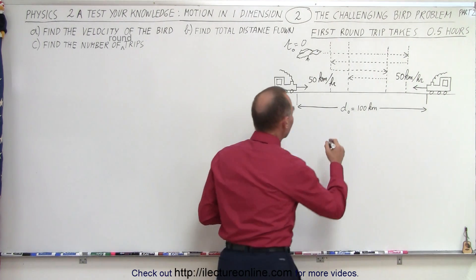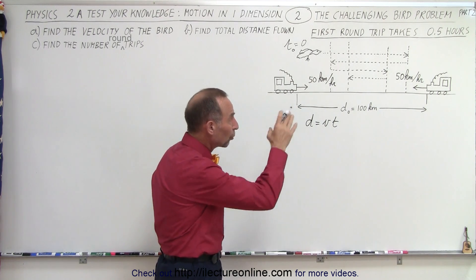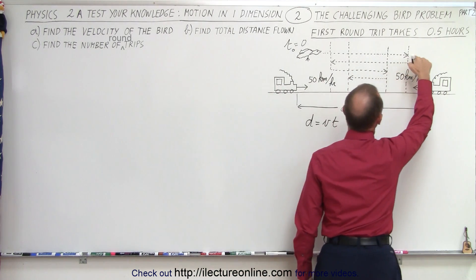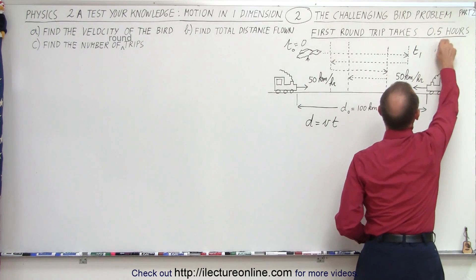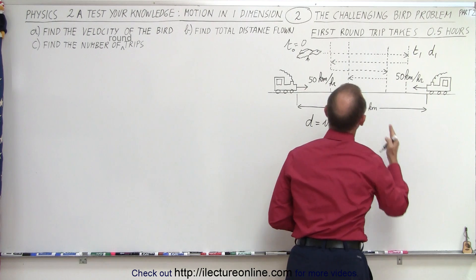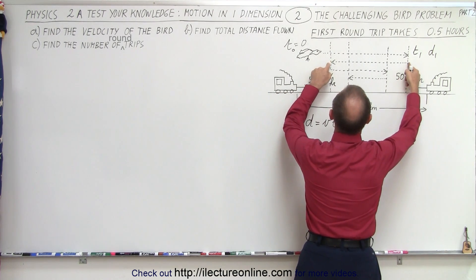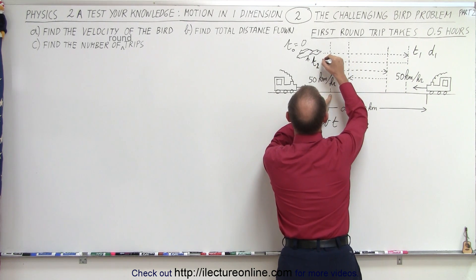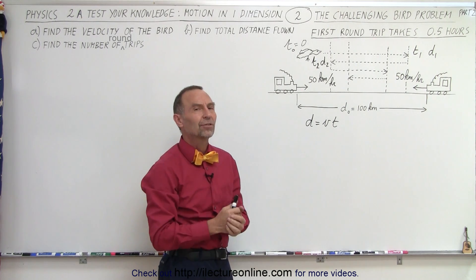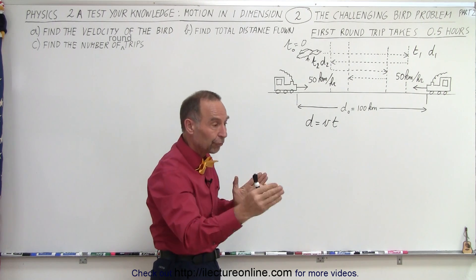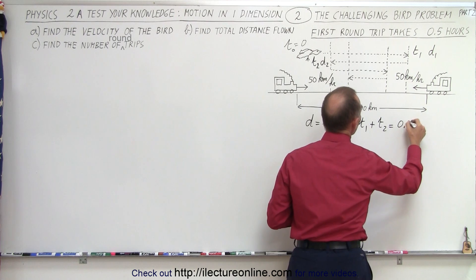First of all, we're going to use the concept that distance equals velocity times time — that's going to come in handy. We know that the total round trip took 0.5 hours. Let's assume that the time it took for the bird to go from here to meet the train on the right is T1, and the distance covered was D1. The bird took T1 time to meet the other train and covered D1 distance. Then the bird flew back to meet the train on this side — that time is T2, and the distance covered is D2. We don't know T1, T2, D1, D2, or the velocity of the bird, but we do know that T1 plus T2 equals 0.5 hours.